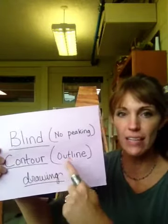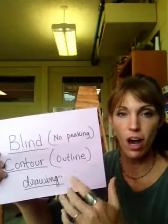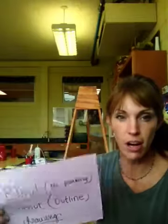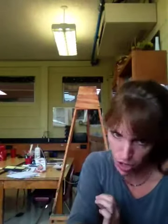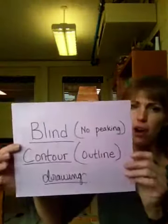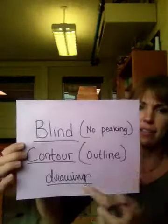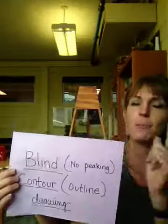Contour is an outline — the contour line of an object is like the outline. If I was to trace my hand — that's not what we're doing. We're not putting our hands on our paper and tracing them. You're tracing it with your eyes. Blind contour drawing means the contour line is the outline.